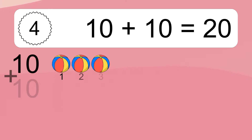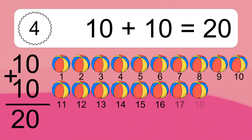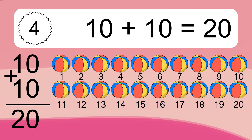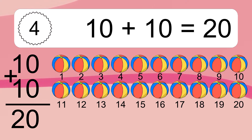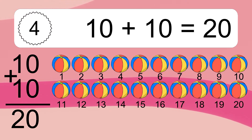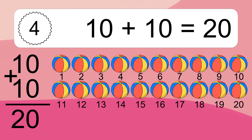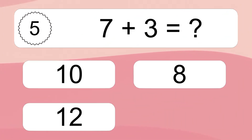10 plus 10 equals what? 10 plus 10 equals 20. Let's count it. 1, 2, 3, 4, 5, 6, 7, 8, 9, 10, 11, 12, 13, 14, 15, 16, 17, 18, 19, 20.